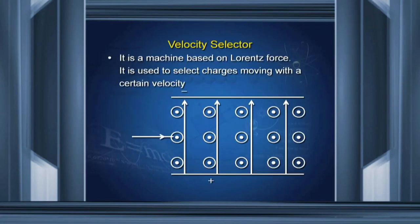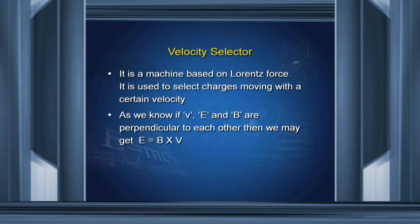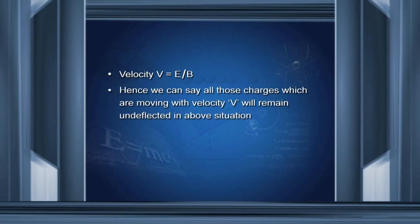Velocity selector: it is a machine based on Lorentz force, used to select charge particles moving with a certain velocity. Since electric field E equals B cross V when E, B, and V are all perpendicular to each other, velocity V equals E divided by B. Hence, all those charge particles moving with velocity V equals E divided by B will remain undeflected while passing through a region where the electric field and magnetic field are perpendicular to each other.